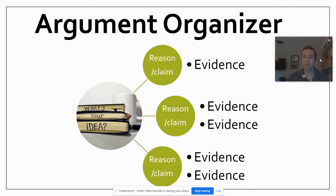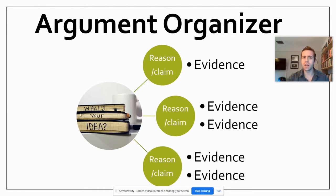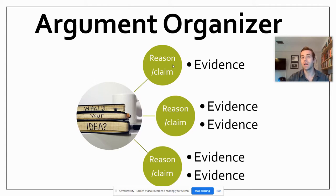As a reminder, this is what we're looking at as a whole when we look at a big work of writing. We have our introductory paragraph outlining what our main idea and thesis is. Then we continue to support that with smaller claims and reasons that back up this main idea, and each one of those claims or reasons needs evidence to support it.